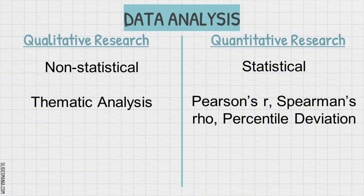Therefore, in qualitative research, data analysis is more subjective, focusing on finding patterns, themes, or meanings in non-numerical data through methods like coding, thematic analysis, and narrative interpretation. However, in quantitative research, data analysis is more objective and uses statistical methods to analyze numerical data and test hypotheses, focusing on patterns, relationships, and generalizations.